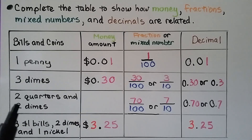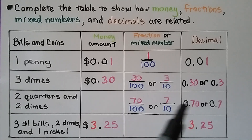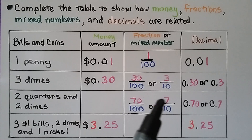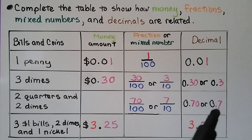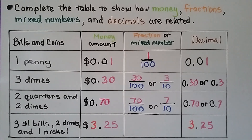For two quarters and two dimes, we need to write the money amount. The table gives us a clue: as a fraction it would be 70 hundredths, or seven tenths, and as a decimal it would be 0.70 or 0.7. That helps us write it as money — we can write $0.70 and put a dollar sign in front. We can use the information already in the table to help fill in empty sections.